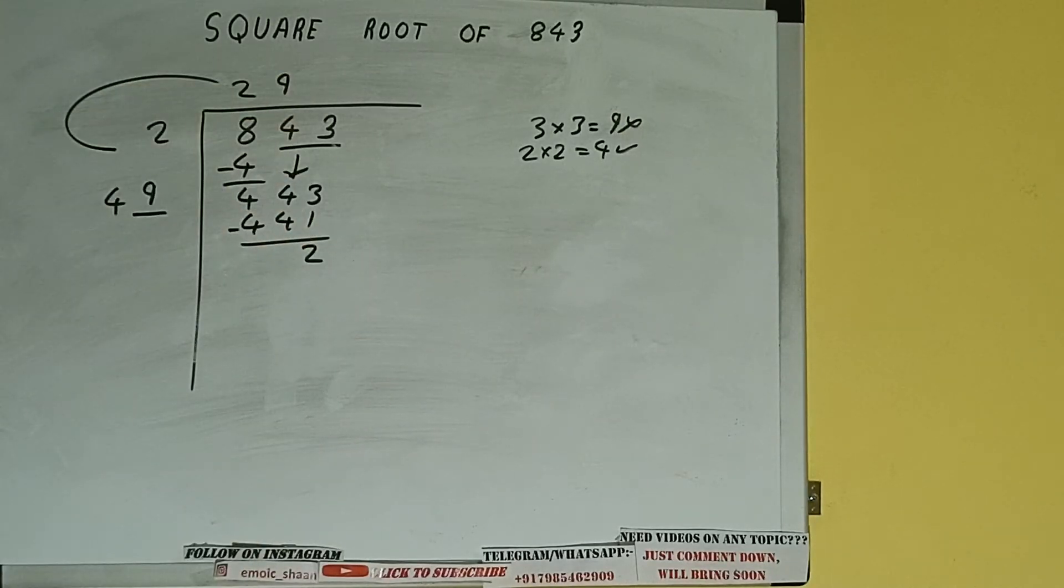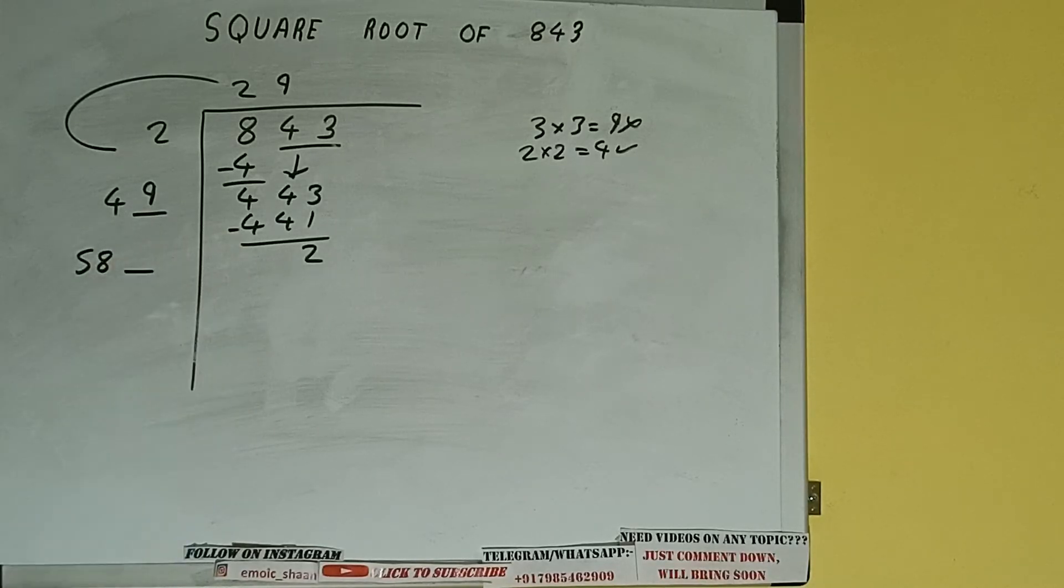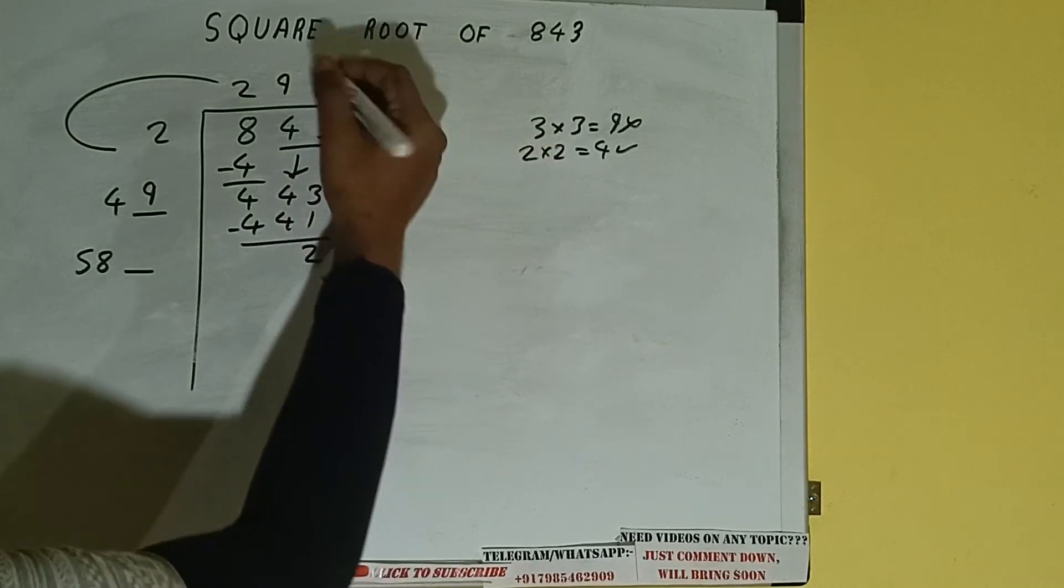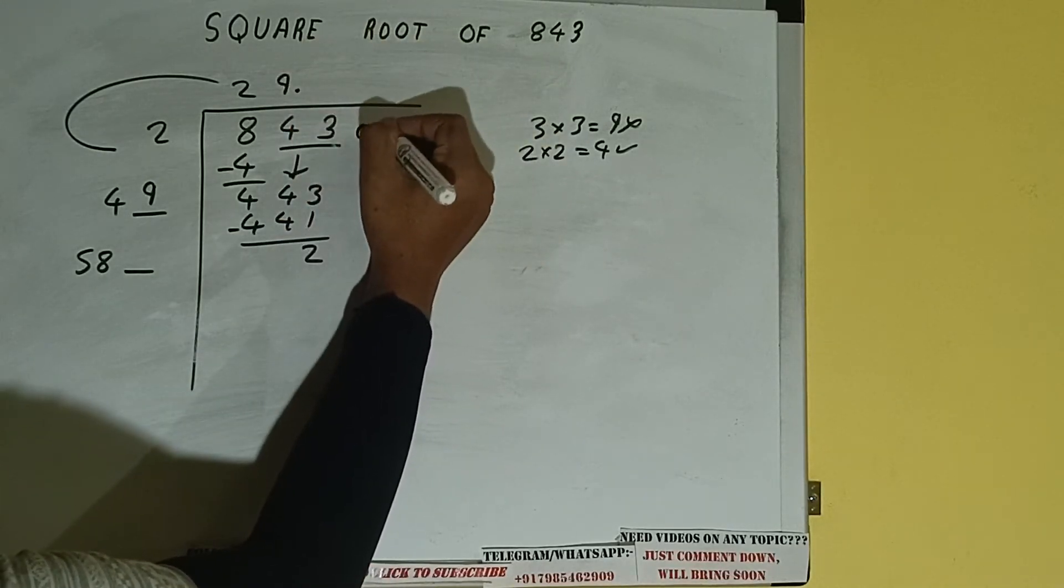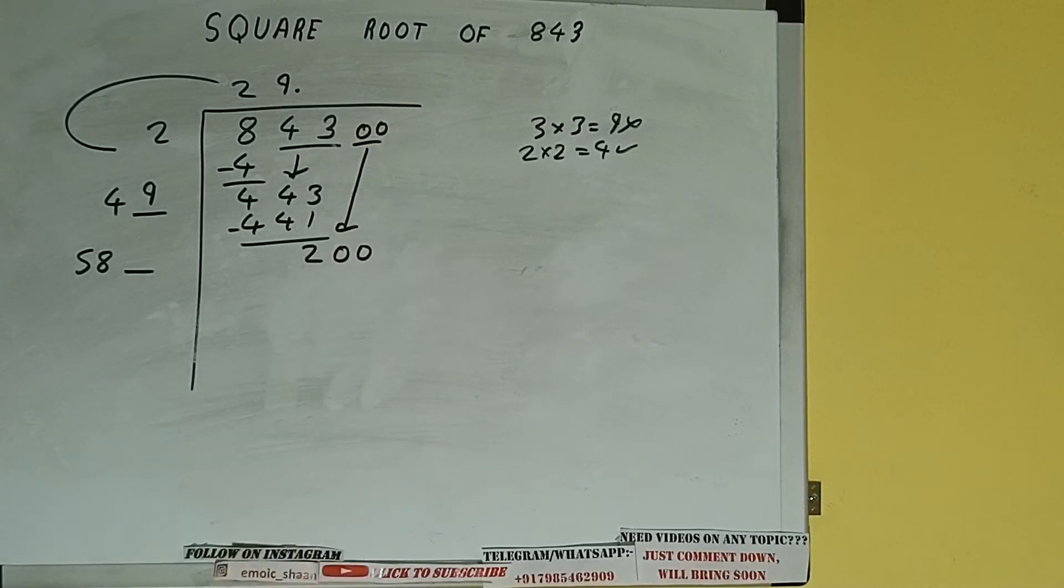Now 49 into 9 we did so add both. So 49 plus 9 will be 58 and 1 digit extra and this number we need to make it big. But we don't have more pair so we'll put decimal. Once we put decimal we can bring pair of zeros down and it will be 200.